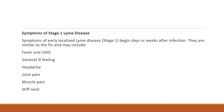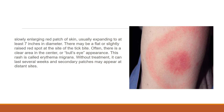Symptoms of Stage 1 Lyme disease include fever, general ill feeling (malaise), headache, joint pain, muscle pain, and stiff neck. The characteristic rash is a bull's-eye pattern — a slowly enlarging red patch of skin usually expanding to at least 7 inches in diameter. There may be a flat or slightly raised red spot at the site of the tick bite, often with a clear area in the center. This rash is called erythema migrans.